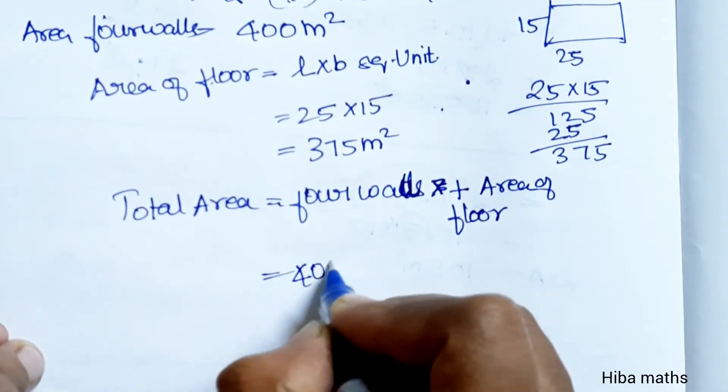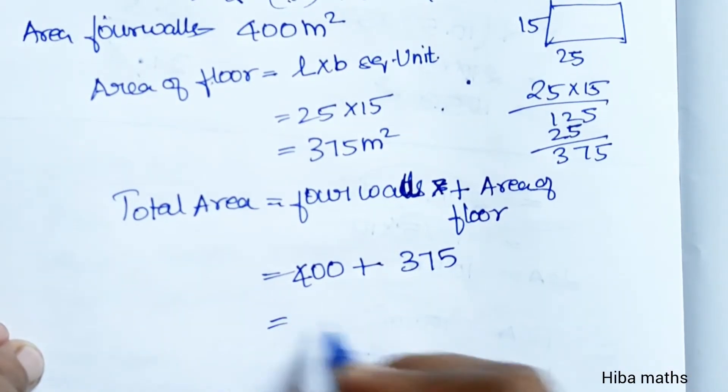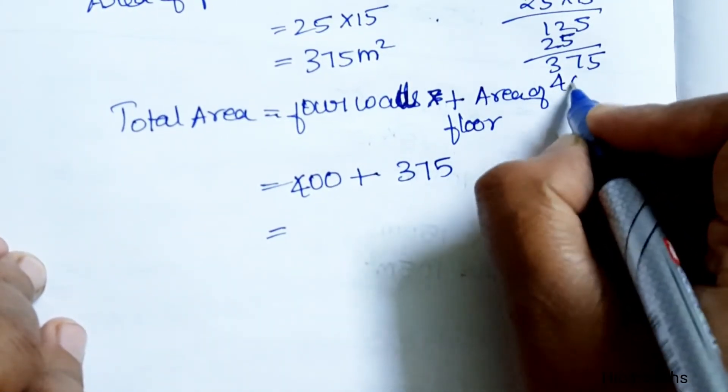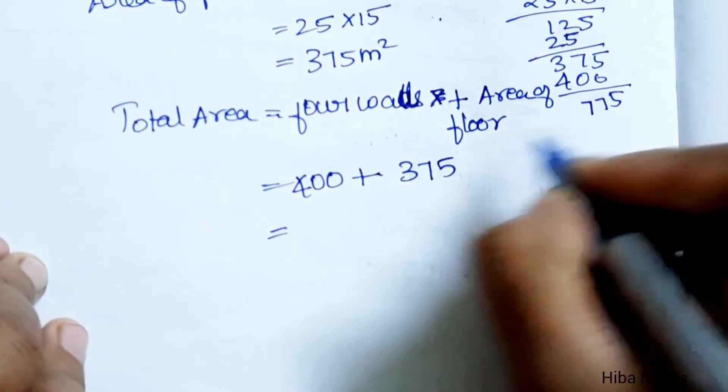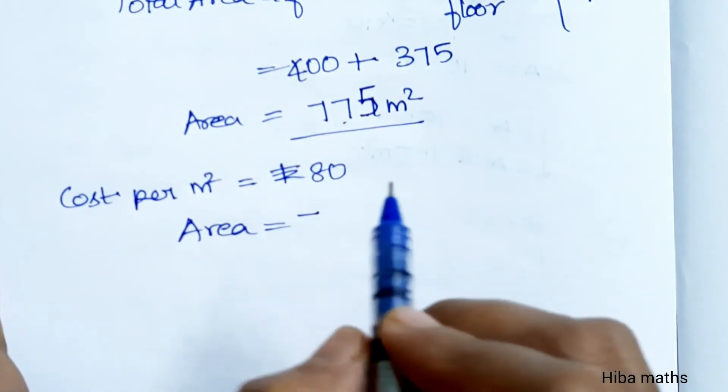4 walls area is 400, area of floor is 375. Total area is 775 m². What is the cost per meter square?